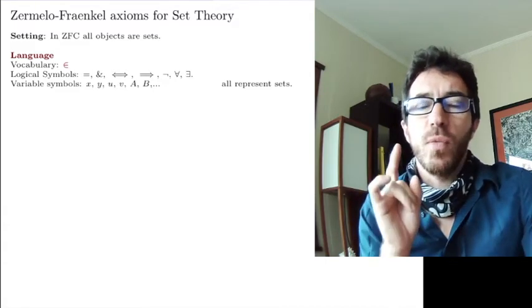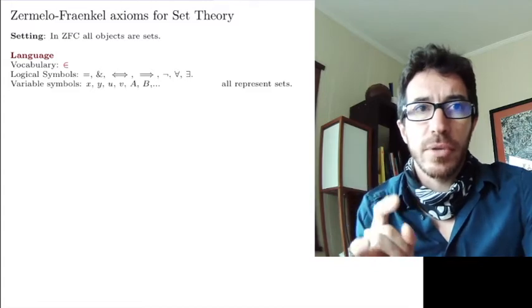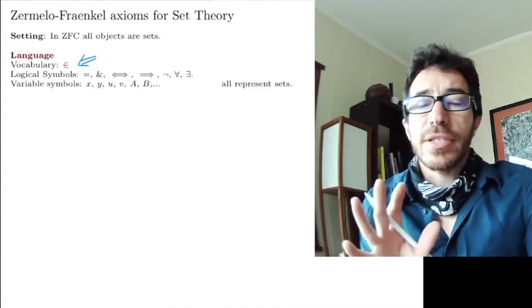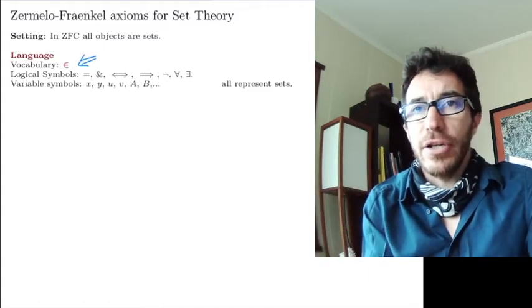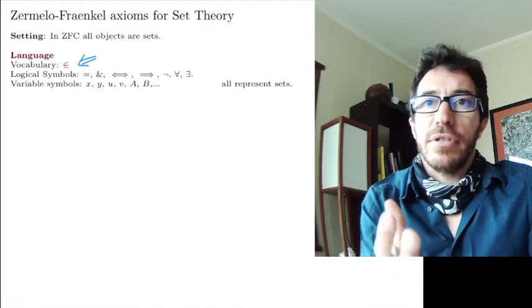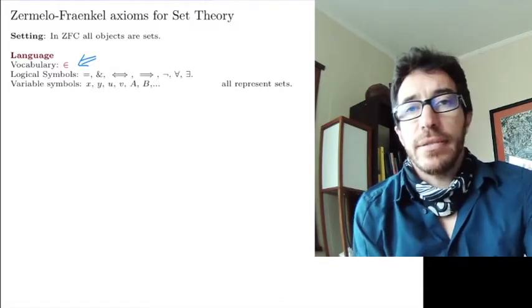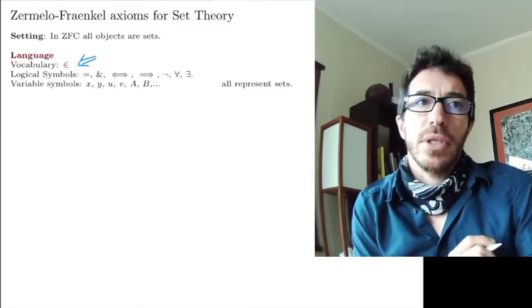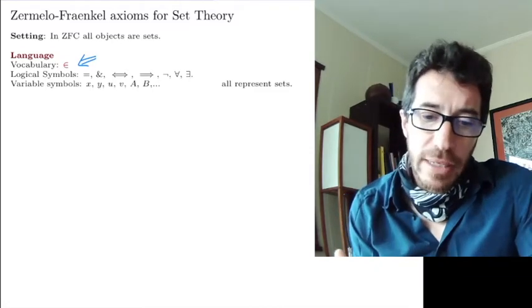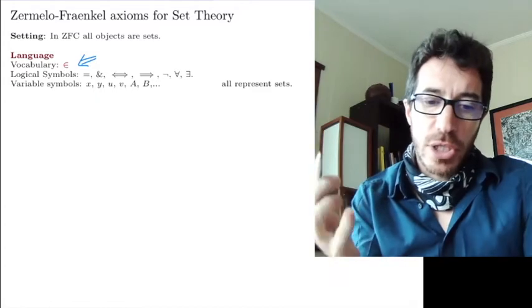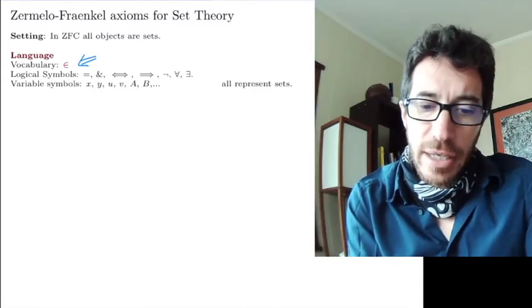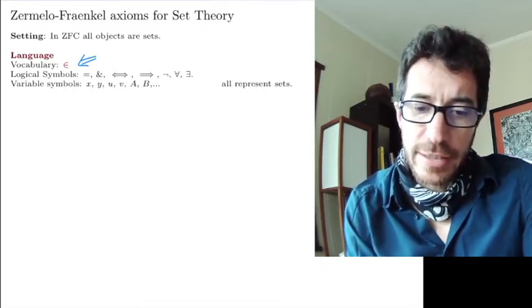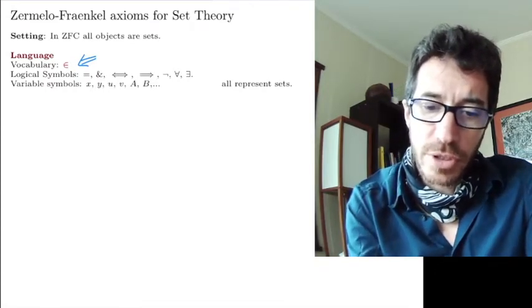Our formal language is gonna contain one important symbol, which is a symbol of belongs. We mentioned it last time. And that's gonna be essentially the main symbol. And all the axioms are essentially describing the behavior of this symbol. This symbol is the one that you need to define set, right? To define a set, you need to know what belongs to what. And then formally, we're gonna have other symbols, which are gonna be equality, and if and only if, implies, not, for all, and exists. And I guess we should put or, the or symbol.